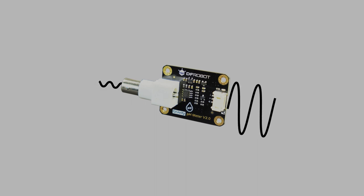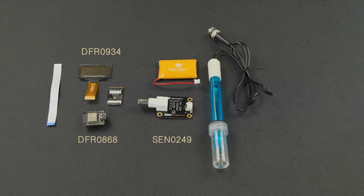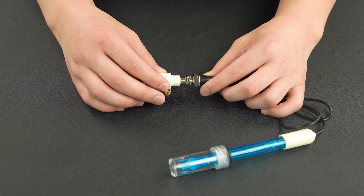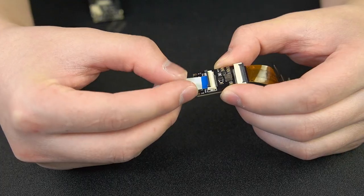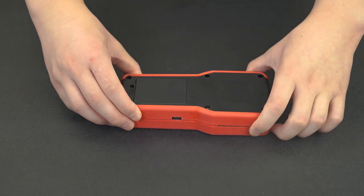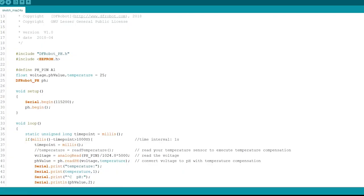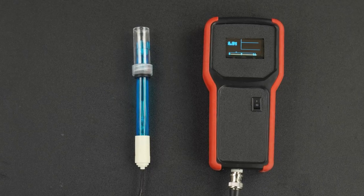How do we use a pH meter? It's easy. Let's try it. Connect the pH sensor, connect it to the display, and upload the code. Then we get a simple pH meter.